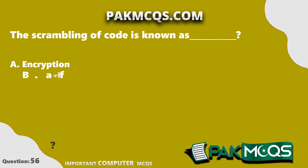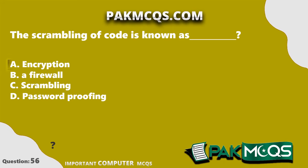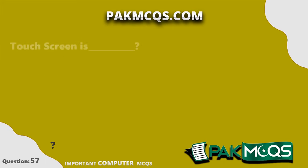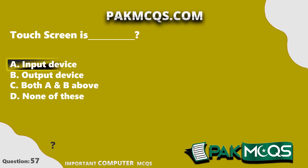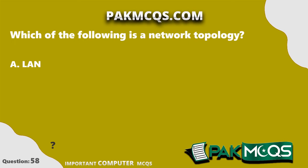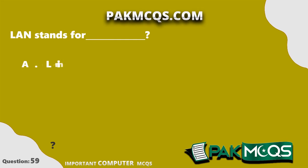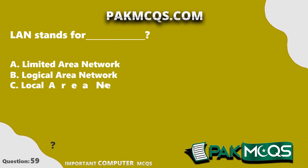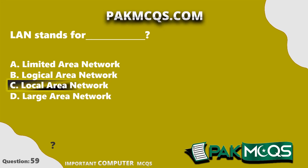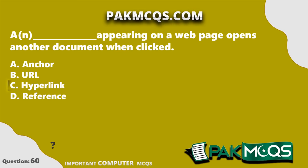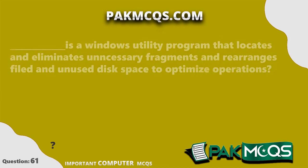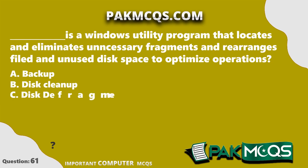The scrambling of code is known as encryption. Touchscreen is an input device. Bus is a type of network topology. LAN stands for Local Area Network. A hyperlink appearing on a web page opens another document when clicked. Disk Defragmenter is a Windows utility program that locates and eliminates unnecessary fragments and rearranges files and unused disk space to optimize operations.